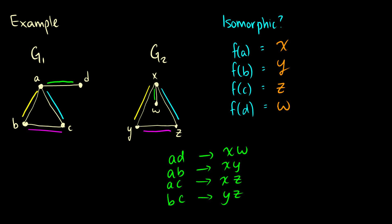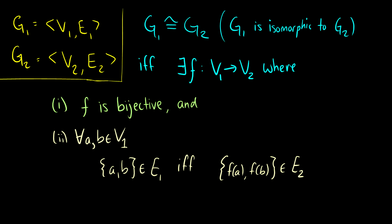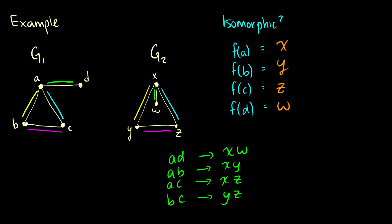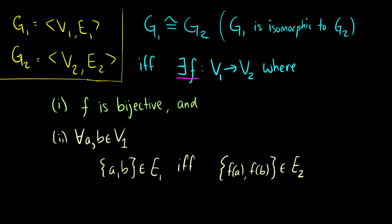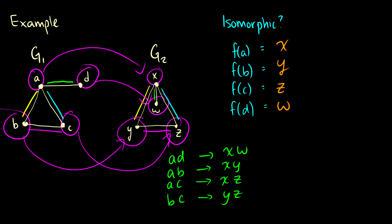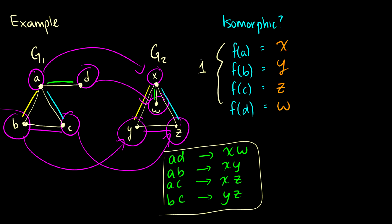Now that we've seen with the graph how isomorphisms work, let's go back to the definition. There's a function from V1 to V2, meaning the nodes in g1 map onto nodes in the second graph. F is bijective, which means all nodes have a corresponding node in the other graph and each node in g1 goes to exactly one node in g2. And if there's an edge in the first graph, that edge will be in the second graph. That's the definition of an isomorphism.